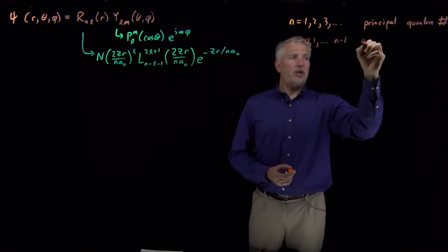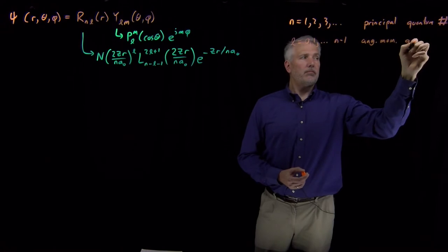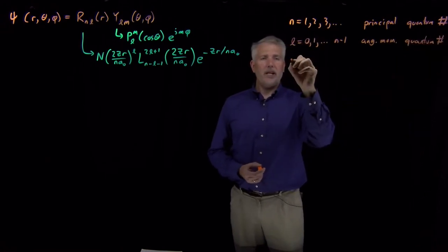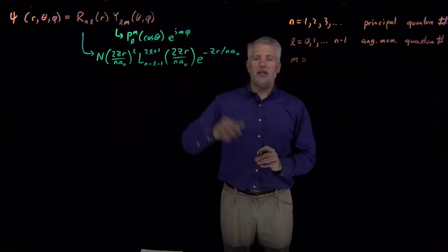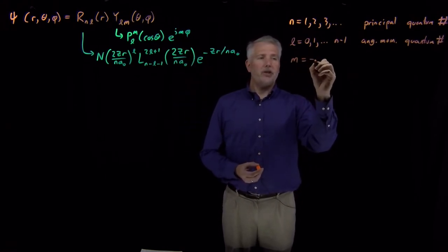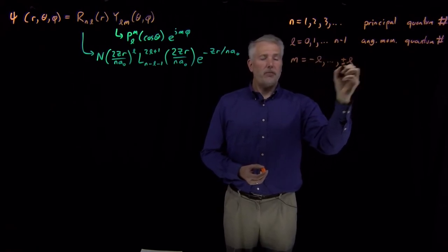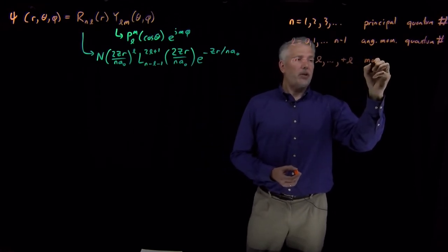And lastly, m, which we haven't talked about recently, but has the same meaning as it does for rigid rotor wave function. We know from the rigid rotor that can range from negative l all the way up to positive l, and that one we call the magnetic quantum number.